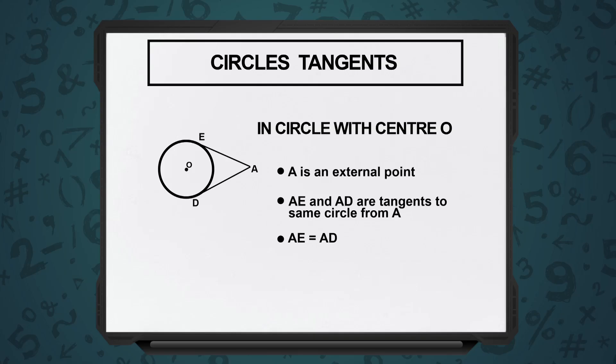The other critical point to remember about tangents is that a tangent is an external line which just touches the circle in one point. If I have this circle with center O and I have this external point A, can you see that it is possible to draw two tangents to the circle?